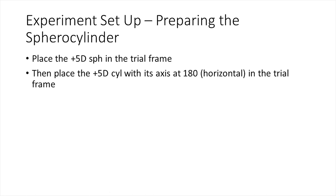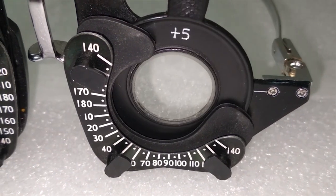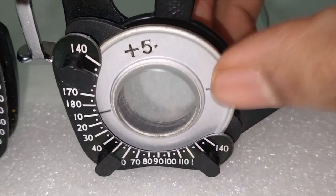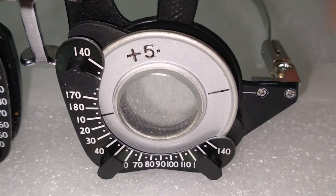The first step is to prepare the required spherocylindrical lens. Place a plus 5 diopter sphere in the trial frame and then the plus 5 diopter cylinder with its axis at 180 degrees.